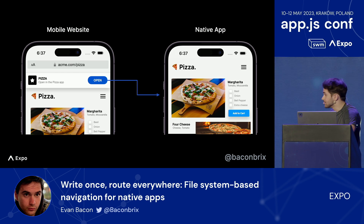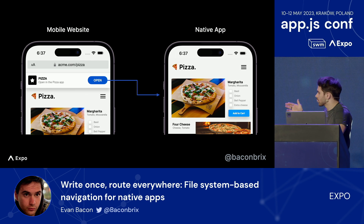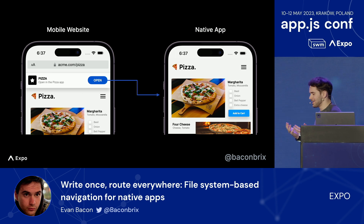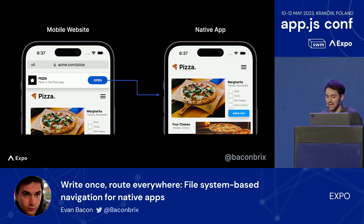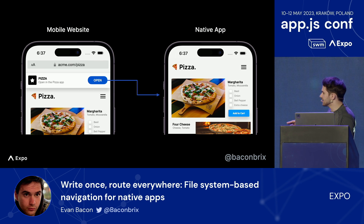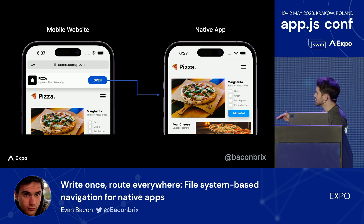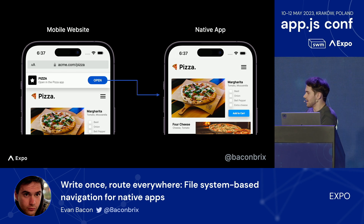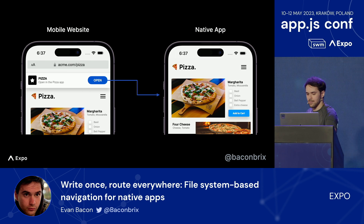The second is universal links. Universal links work by creating a website and a native app and then painstakingly linking them together. At Expo, we refer to apps that are built on universal links as universal apps. When a universally linked native app is installed on a user's device and they open the link to the connected website, the OS skips over the mobile website and takes you right into the application.